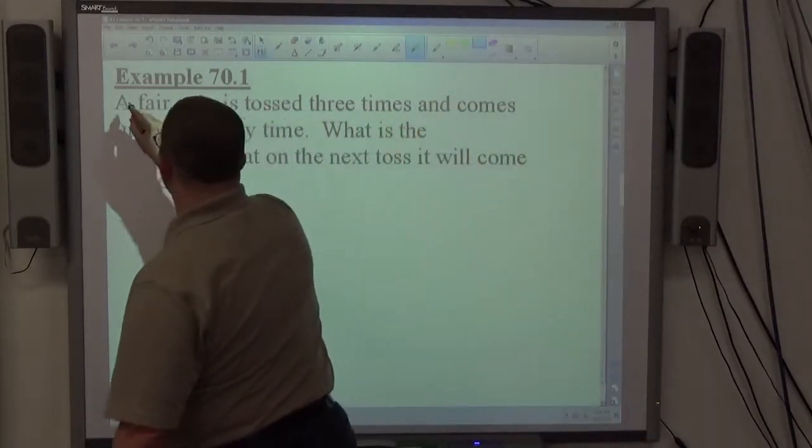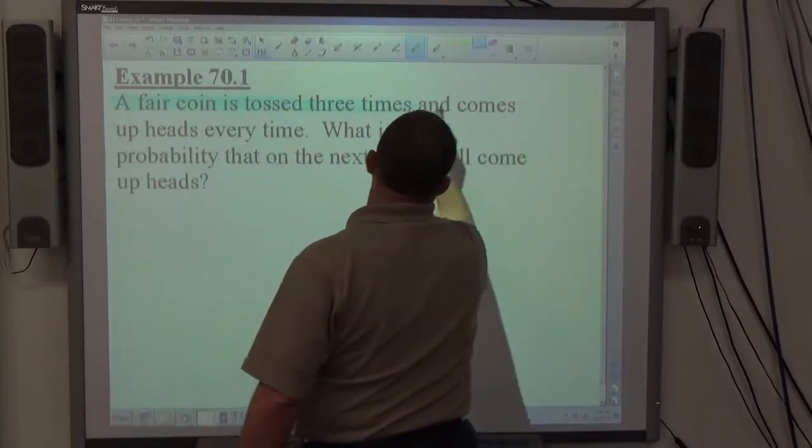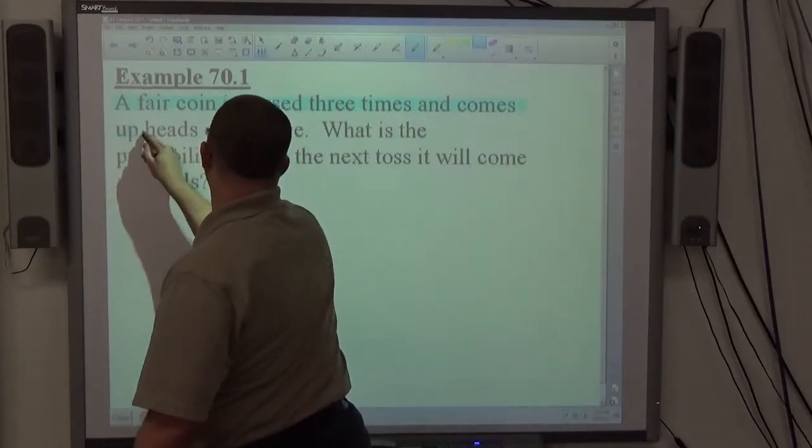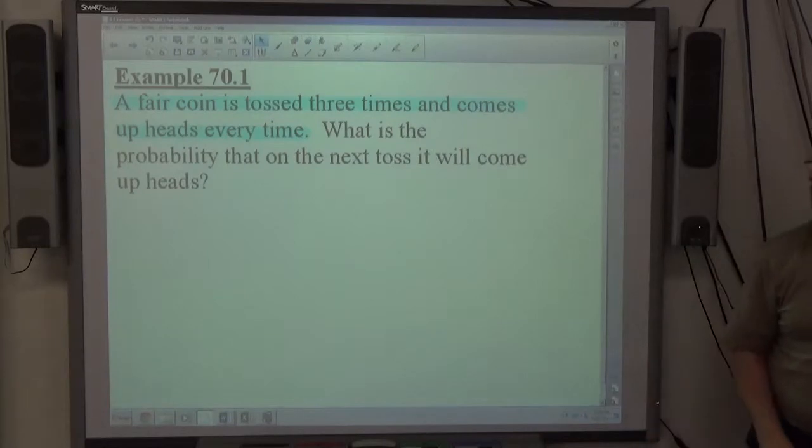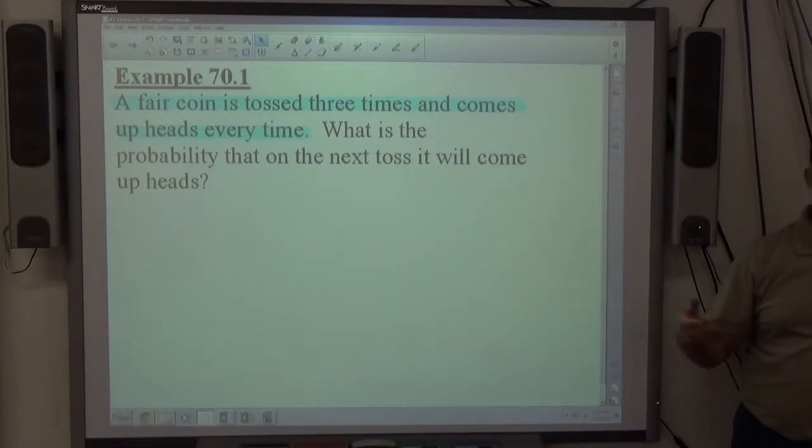What that means is that what happened before has no bearing over what happens next. So when they give you information like this, a fair coin is tossed three times and comes up heads every time, that's irrelevant to the next coin flip. Just because you've got heads, heads, heads, doesn't mean the next flip is going to have to be heads. It could just as well be tails. So when they tell you what already happened, just kind of ignore that information.